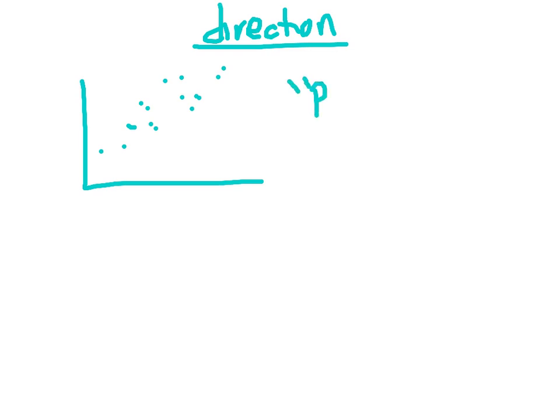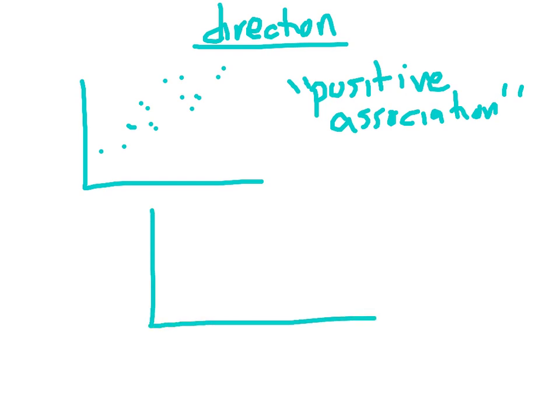Let's begin with the idea of direction. There basically are two possibilities, positive and negative. For example, if you had a scatterplot that looks something like this—see how, in general, it goes uphill? We would say that this has a positive association, because in general it's going uphill.